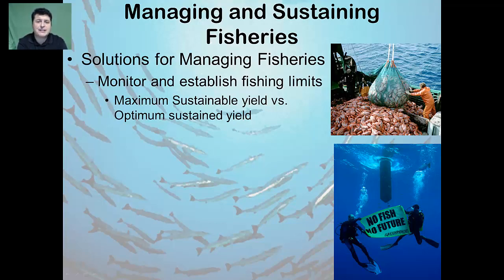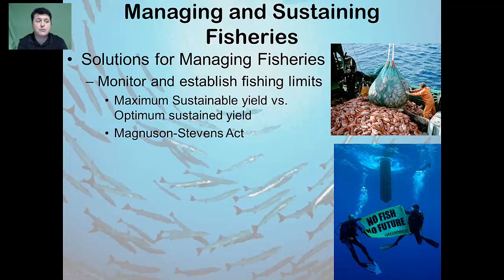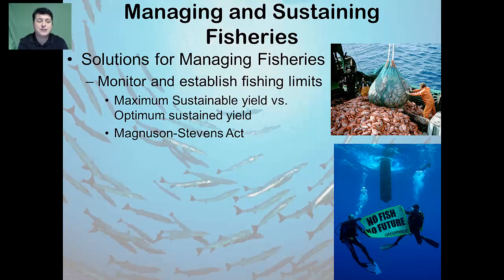The concept of optimum sustained yield incorporates both economic and social aspects of fishing, combining the idea of maximum sustainable yield with evaluations of economic benefits to the area — in the creation of jobs and money added to local economies — as well as the social benefits of maintaining a traditional way of life. On January 12, 2007, President Bush reauthorized the Magnuson-Stevens Fishery Conservation and Management Act, which mandates the use of annual catch limits and accountability measures to end overfishing and calls for increased international cooperation towards the establishment of fishing limits.